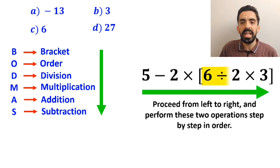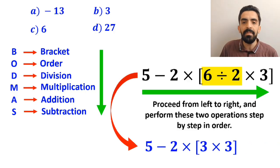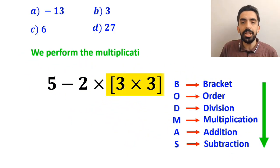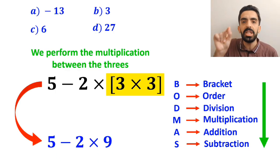So, we'll start with the expression 6 divided by 2, and rewrite this expression as 5 minus 2 multiplied by 3 times 3 inside the brackets. In the next step, we perform the multiplication between the 3s, and this expression simplifies to 5 minus 2 times 9.